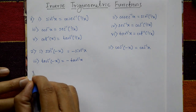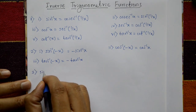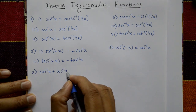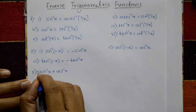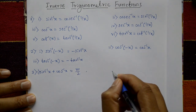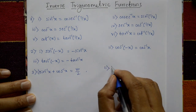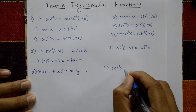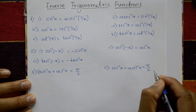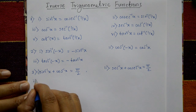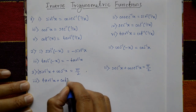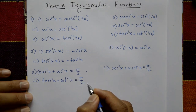Next set of formulas. First: sin inverse x plus cos inverse x is equal to pi by 2. Second: secant inverse x plus cosec inverse x is equal to pi by 2. Third: tan inverse x plus cot inverse x is equal to pi by 2.